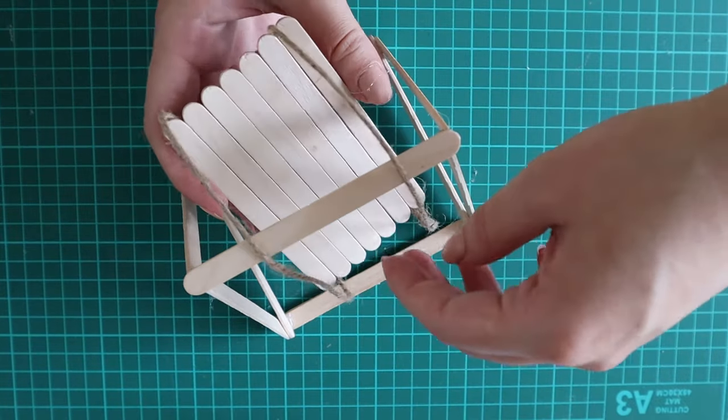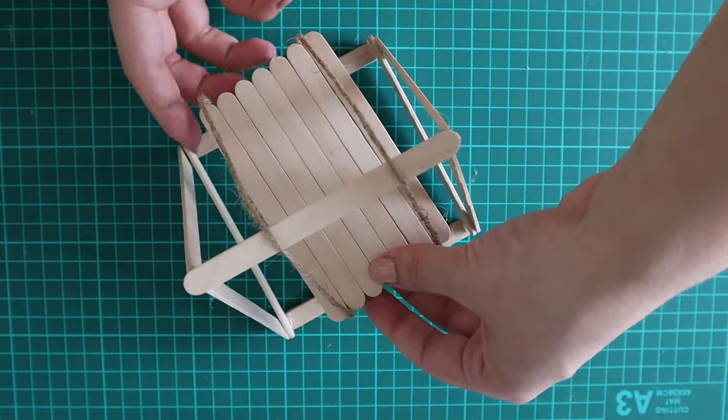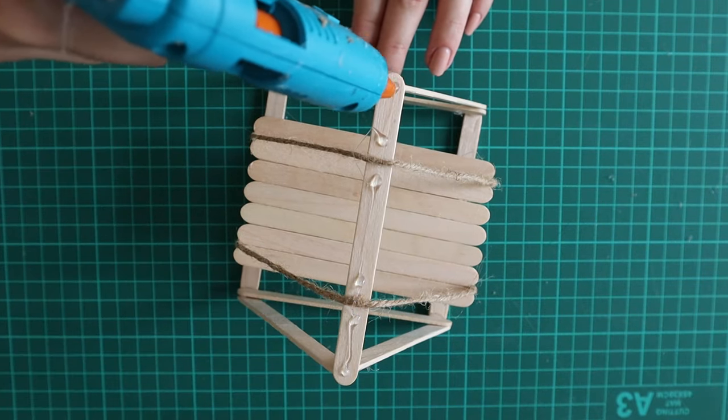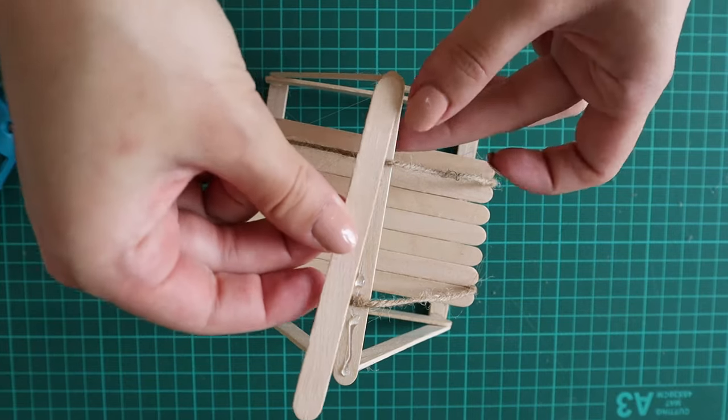Once the glue has dried, I've gone ahead and flipped the seat around to its proper position. Then I'm just gluing the top stick, avoiding the strings, and this is where I'll put another popsicle stick to secure the strings in place.